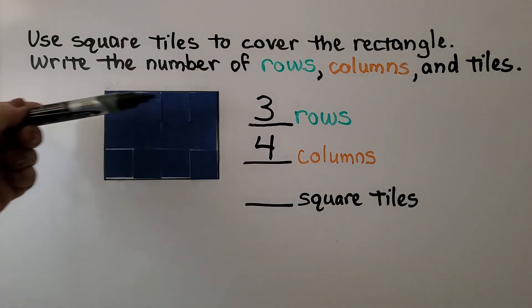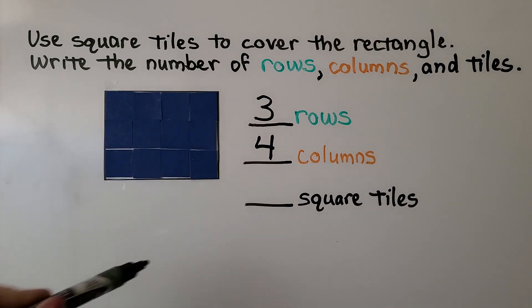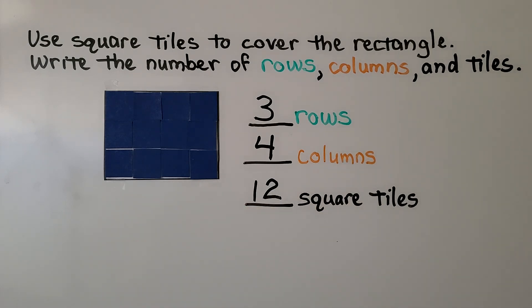We have 4, 5, 6, 7, 8, 9, 10, 11, 12 square tiles. Three rows of 4 columns makes 12 square tiles.